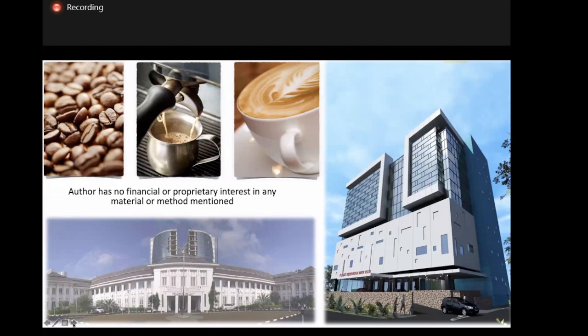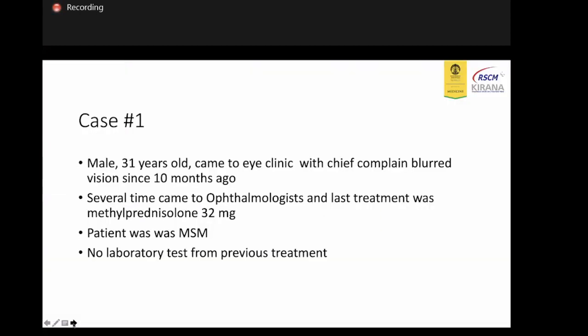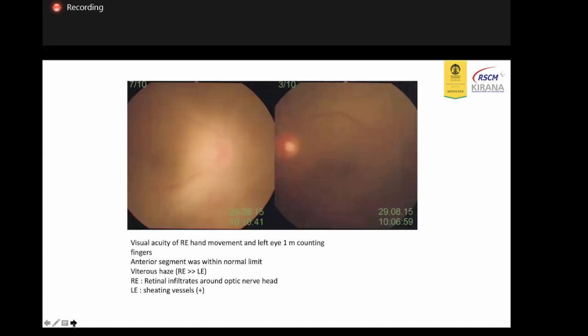I start with the first case: a male, 30 years old, who came to our uveitis clinic with a complaint of blurred vision since 10 months ago. He had already come to some clinicians and the last treatment was prednisolone around 22 milligrams. The patient also reported male sex with male. In the first visit, the patient had visual acuity of almost hand movement in one eye and one with a couple of fingers, which is nearly normal in the other segment.